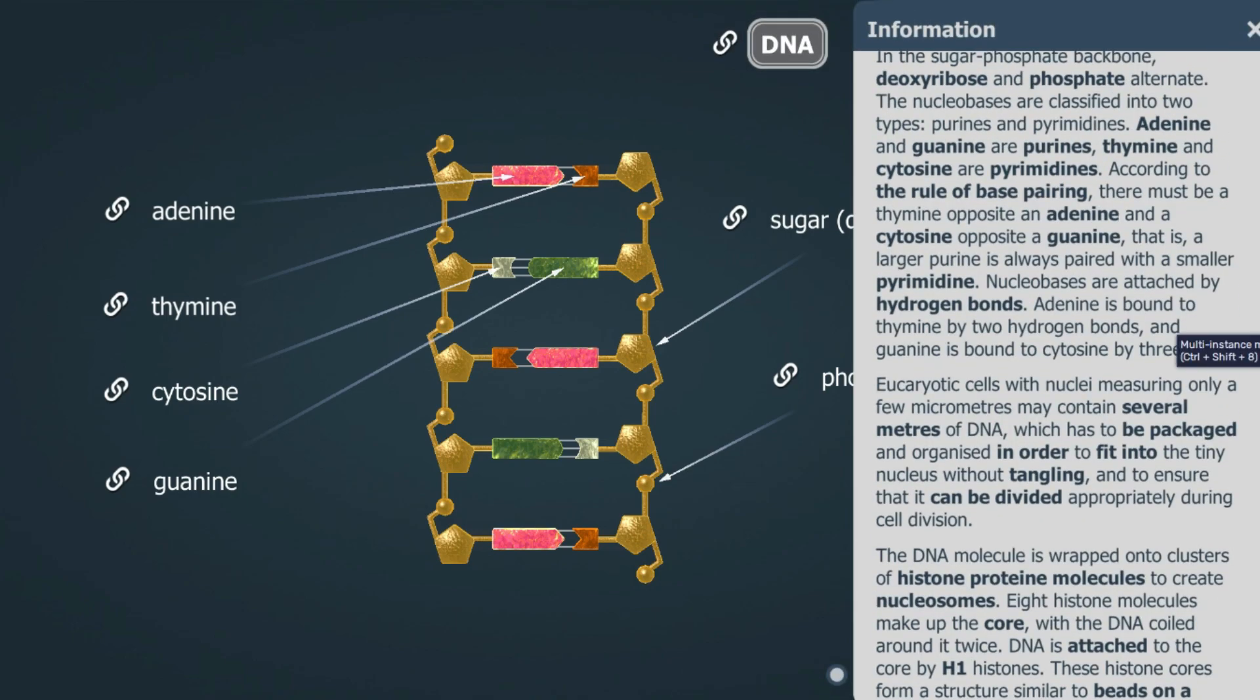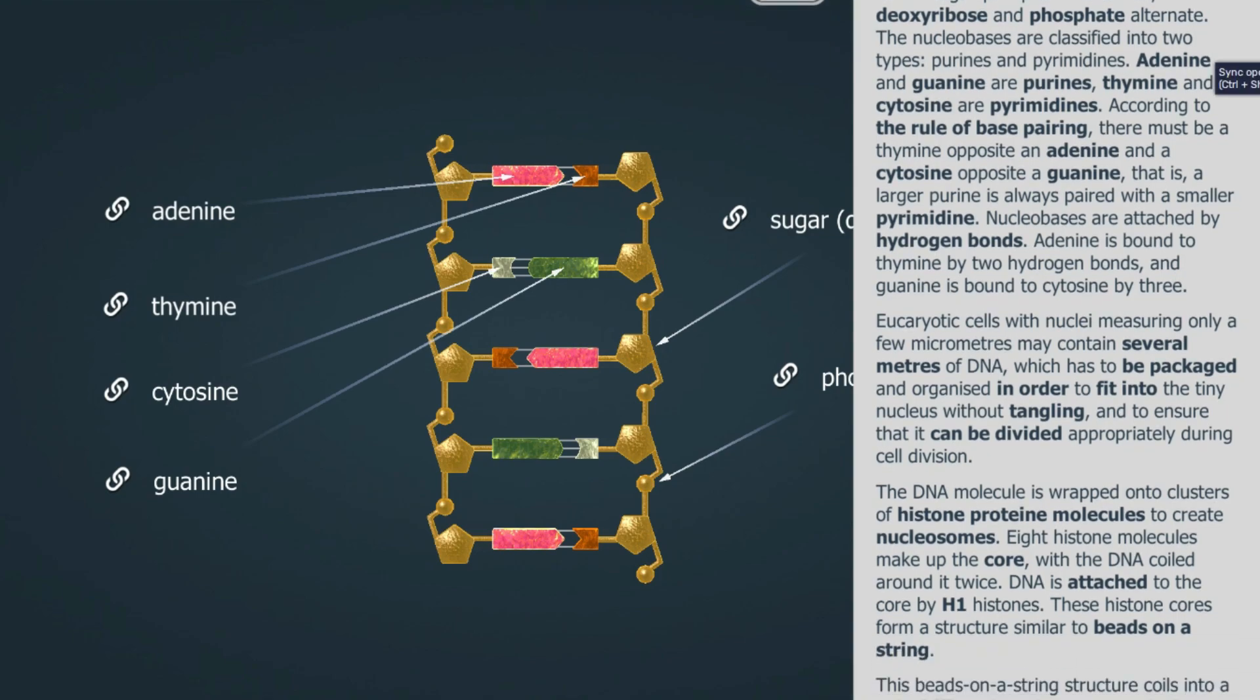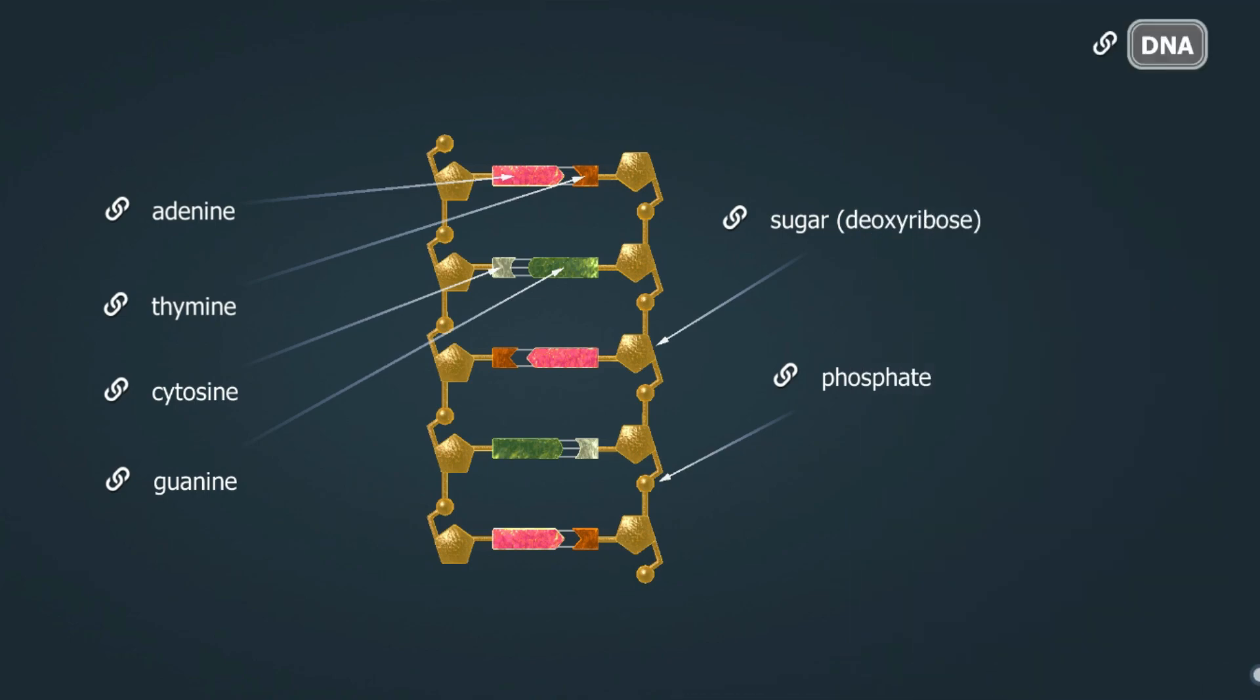Nucleobases are attached by hydrogen bonds. Adenine is bound to thymine by two hydrogen bonds, and guanine is bound to cytosine by three.